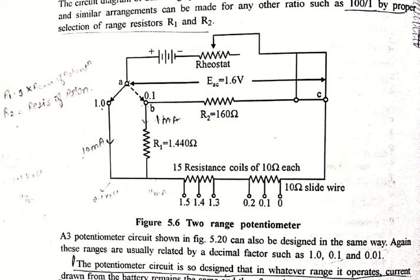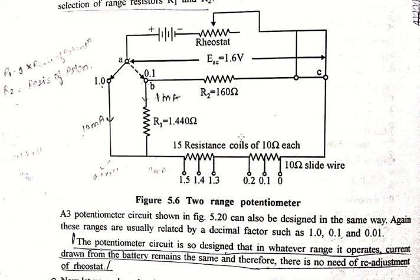The circuit diagram of dual range potentiometer is shown here in terms of 10 by 1 ratio, and similar arrangements can be made for any other ratio such as 100 by 1 by proper selection of the range resistors R1 and R2.